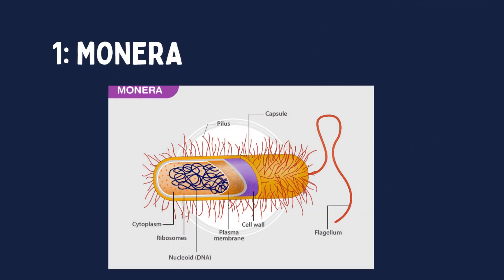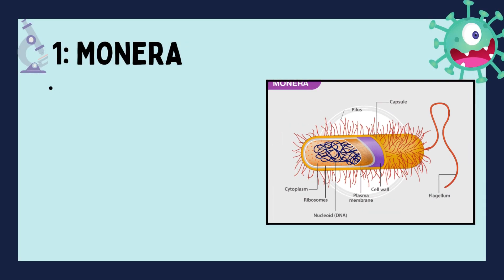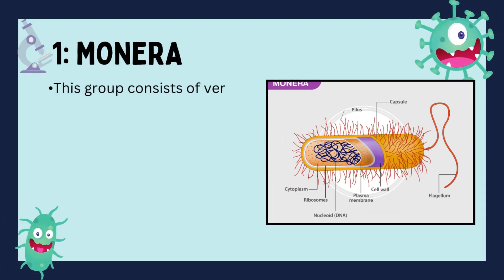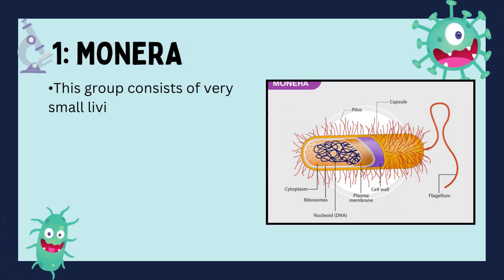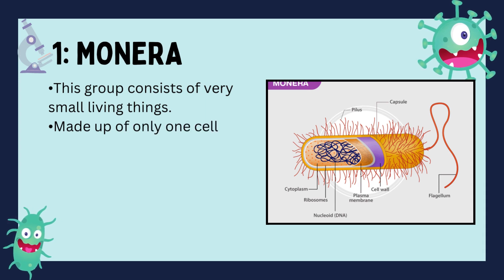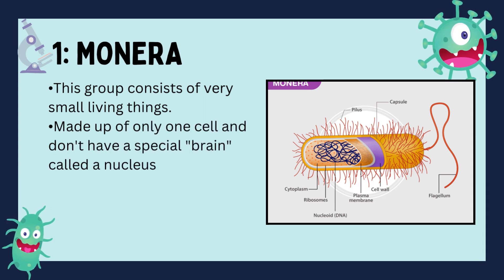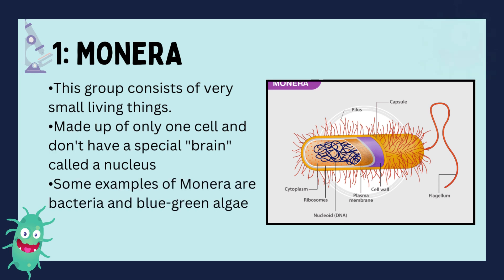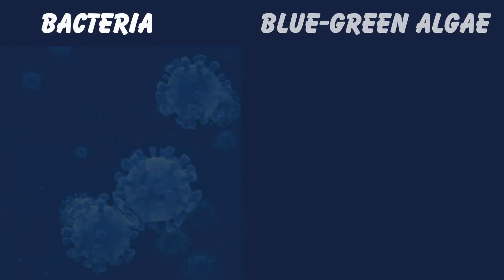Firstly, let's talk about Monera. This group consists of very small living things — so small you can't see them with your naked eye. They are made of only one cell. They don't have a special brain called a nucleus. Some examples of Monera are bacteria and blue-green algae.